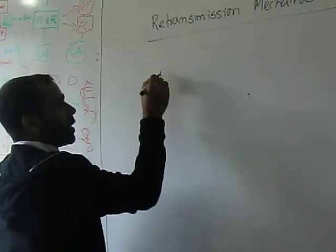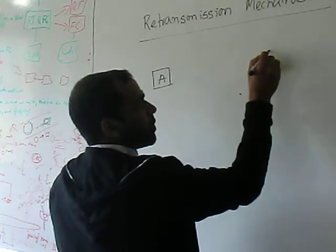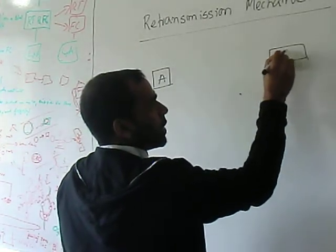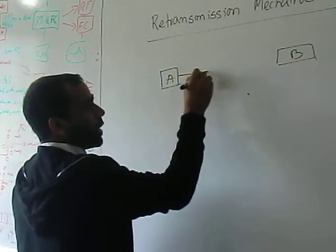Let's assume that there are two nodes, A and B. And when A sends a packet to B, it sends a data packet.